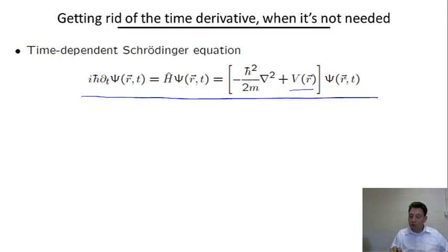Neither the mass nor the potential are time-dependent. In this case, it turns out there is absolutely no need to deal with this complicated partial differential equation that involves the time derivative. The time dependence can be factored out of the equation in a very straightforward way.